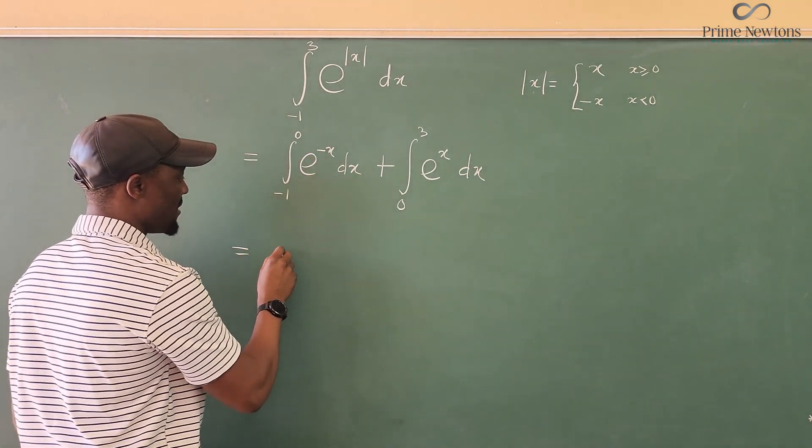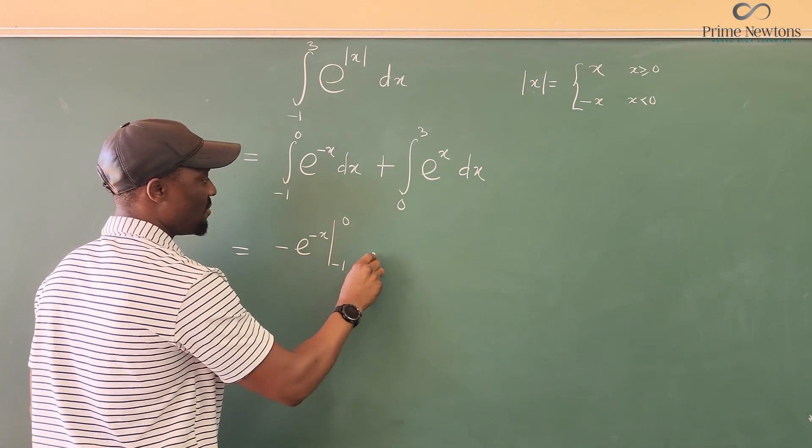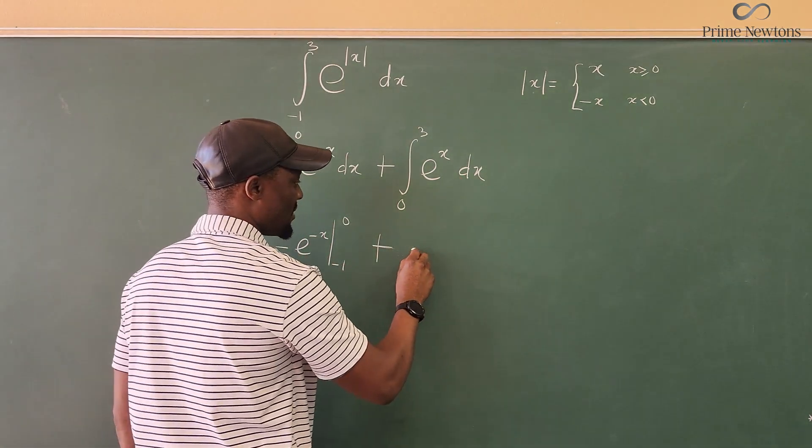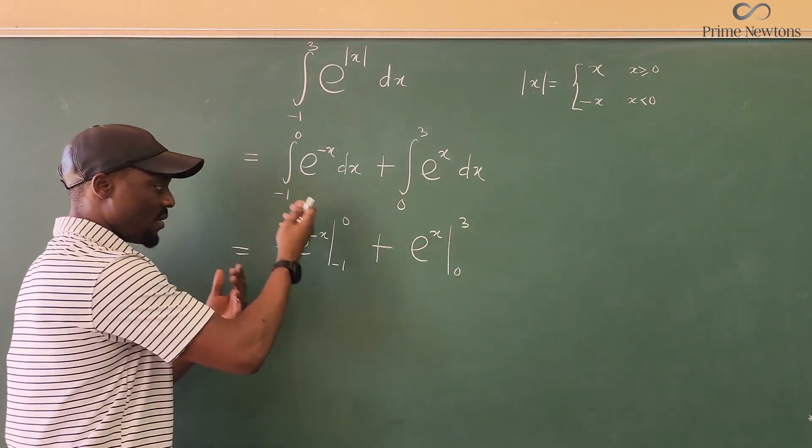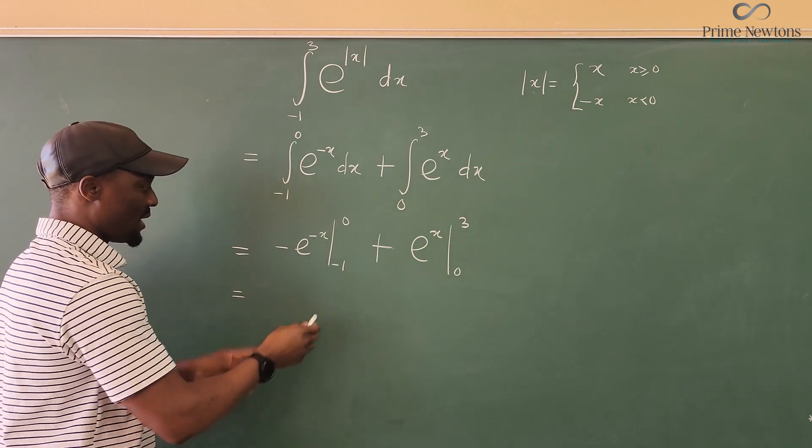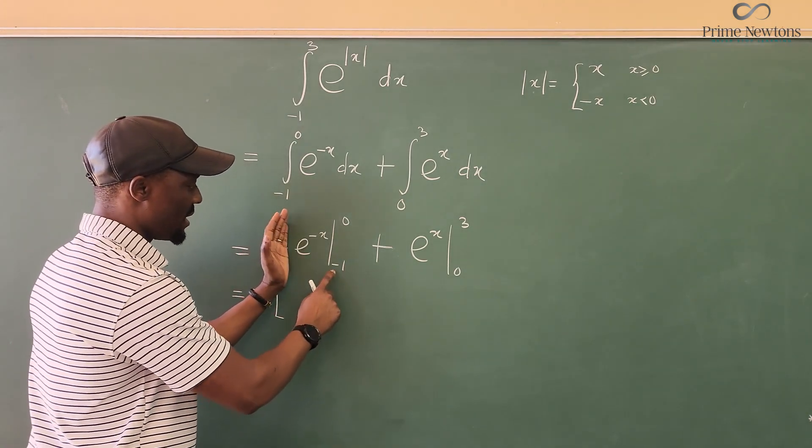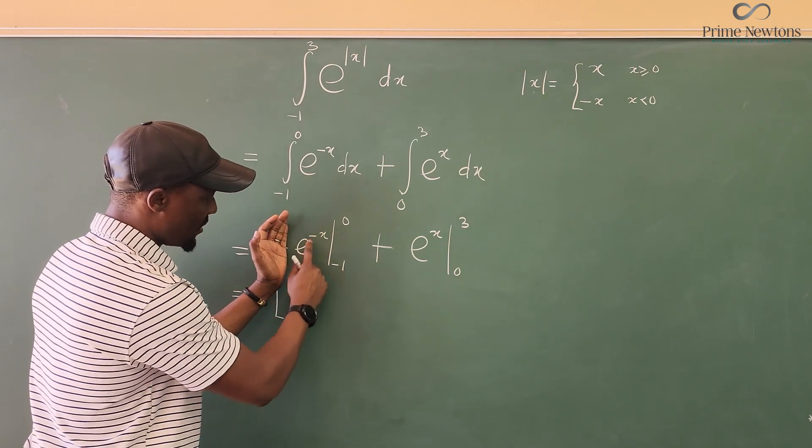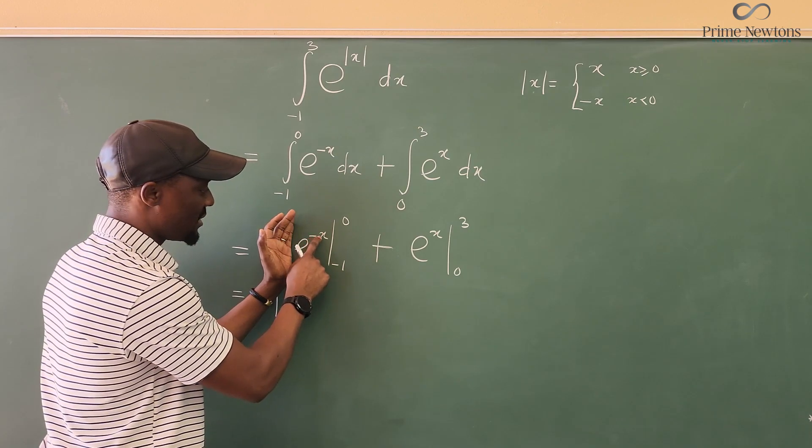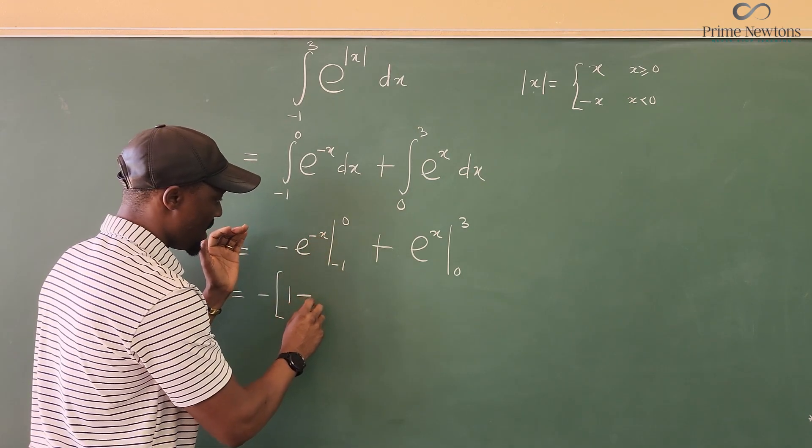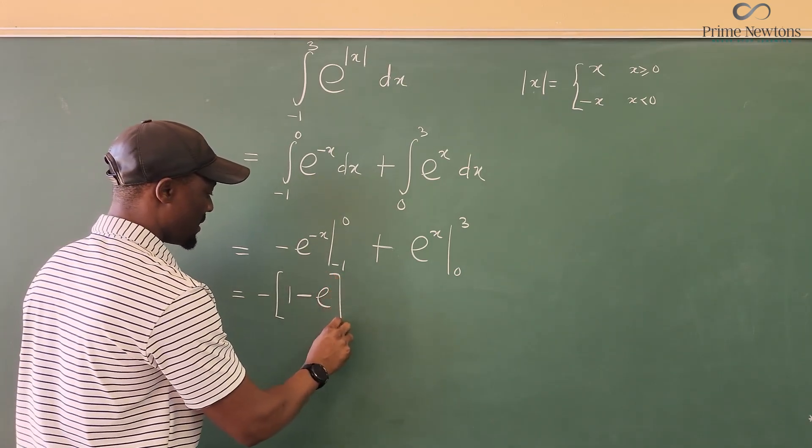If we integrate this, it's going to be minus E to the negative X evaluated from minus one to zero plus, if we evaluate this, it's going to be E to the X evaluated from zero to three. We just need to plug in our numbers. Well, let's pull out the minus to avoid confusion. If you plug in zero here, it's going to be E to the zero, that's one. If you plug in minus one here, it's going to be minus E to the one, which is E. And that's that.